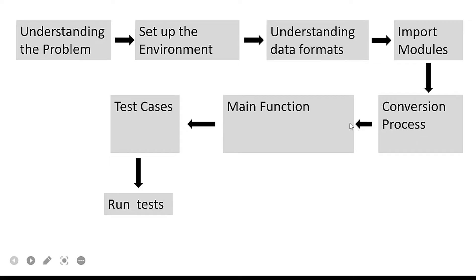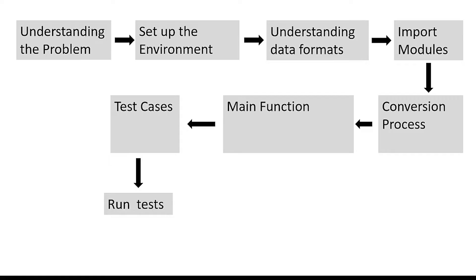Step 6: Main Function. The main function checks whether the JSON data is in format1 or format2 and chooses the appropriate conversion function accordingly. Step 7: Test Cases. Unit tests are defined using the unittest framework to validate the correctness of the conversion functions and the overall solution. Step 8: Run Tests. Finally, the unittest.main call runs the defined test cases.